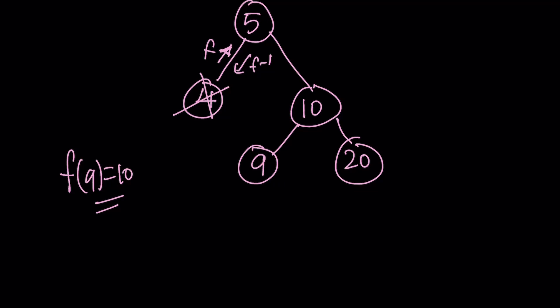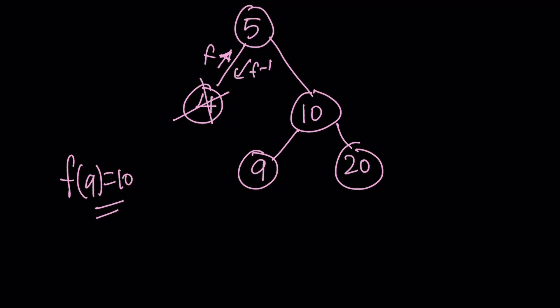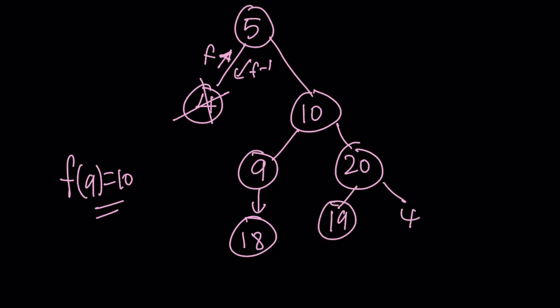It's like branching off in different directions. 9 is odd, just like 5, so we're just going to double it — giving us 18. We're not going to subtract 1 from it. 20 is even, so we can do both: subtract 1 and double, giving us 19 and 40.